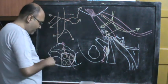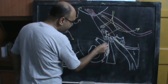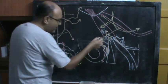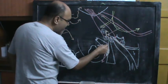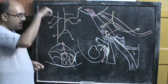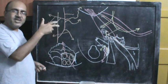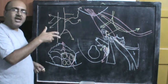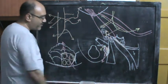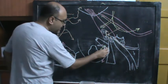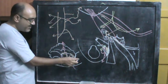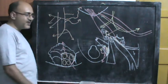Another important branch is the stylomastoid branch. The stylomastoid foramen, located between the styloid process and the mastoid process, is where the facial nerve emerges. Just after emergence, the facial nerve gives branches to the posterior belly of the digastric, the stylohyoid, and the posterior auricular region. The stylomastoid branch of the occipital artery passes back through the stylomastoid foramen alongside the facial nerve.